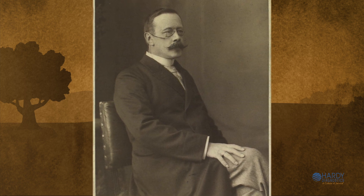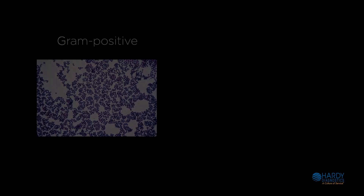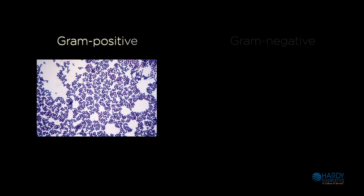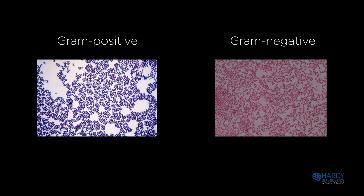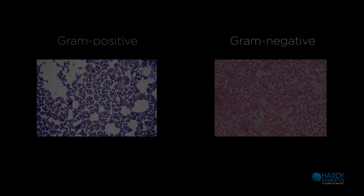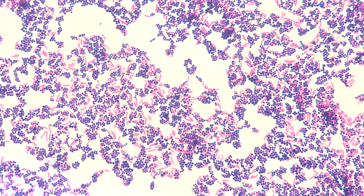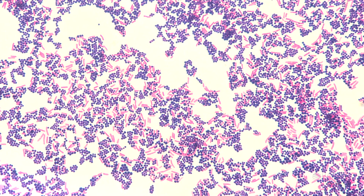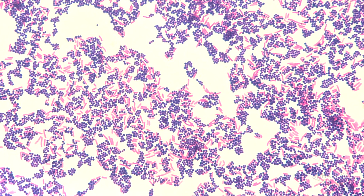The Gram stain is used to distinguish between gram-positive and gram-negative cells. It is the most commonly used method to observe bacteria. The Gram stain provides two important features: the gram reaction, or color of the cell, and the cell morphology — the shape of the cell.